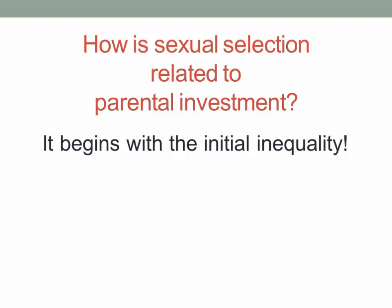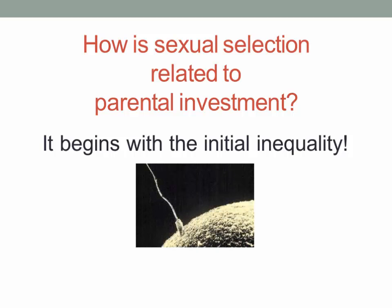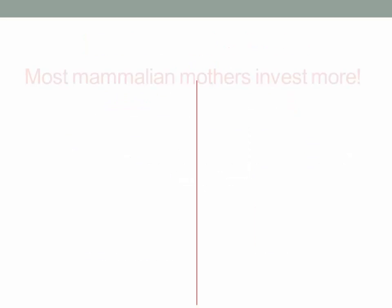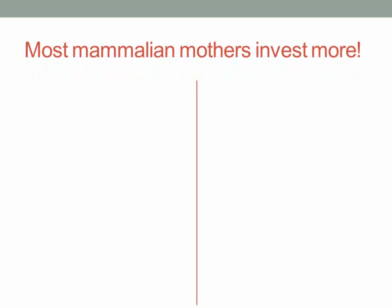The way we're going to answer that is with what's called the initial inequality. This is the idea that males and females among mammals make very different investments in their offspring from the beginning. We can see that in this image of how small the sperm is compared to how large the egg is — the female has put a larger investment into that egg than the male has into the sperm. How much parental investment is made is related to the kind of reproductive strategy undertaken, and that helps shape sexual selection in ways that operate differently for males and females.